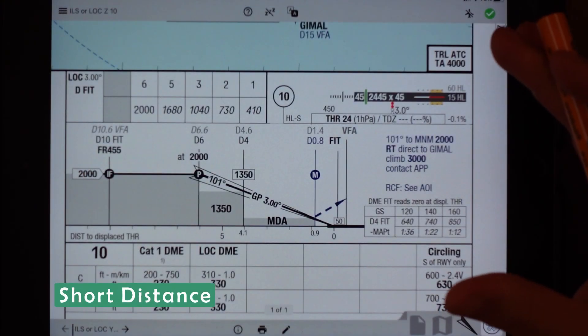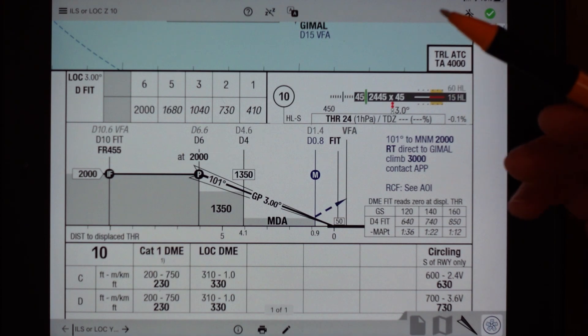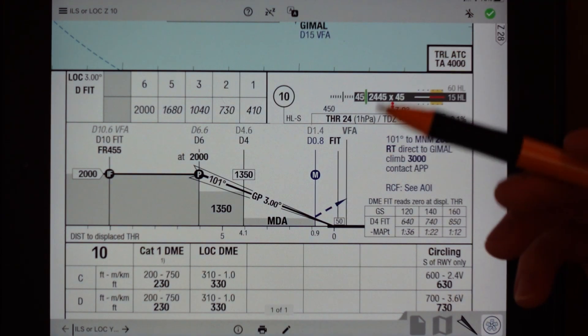Short distances are generally measured in feet or meters, and using that same conversion that we've seen before you can get between the two.